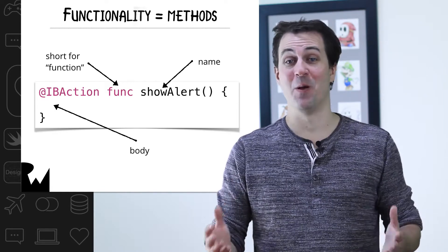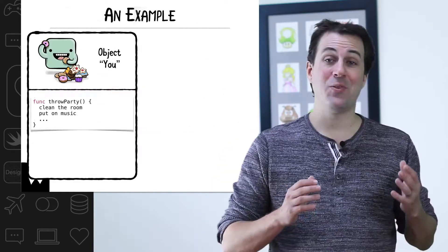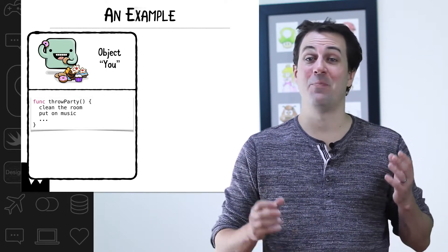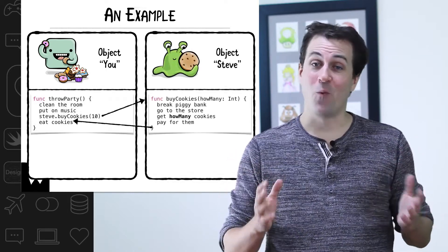This concept of methods may still seem a little bit weird, so here's an example. Imagine that you, or at least an object named you, wants to throw a party. You clean the room, you put on some music, but you forgot to buy cookies.